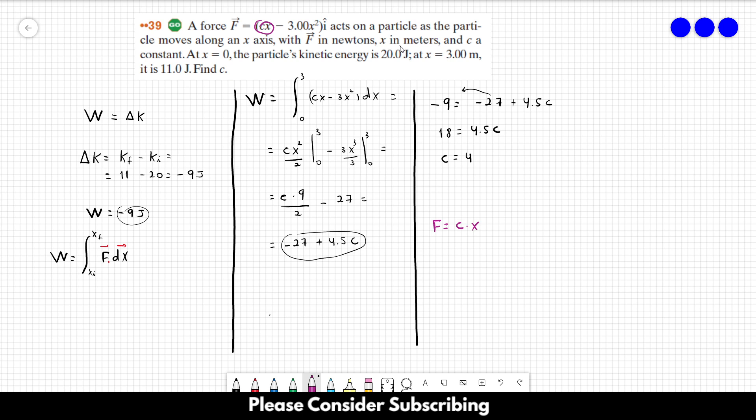You see that F is equal to C times X, and X is in meters. So this is in meters, and the force is in newtons. So C is equal to F over X, which gives us newton per meter. So that's the unit of C. The full answer is C is equal to 4 newton per meter.